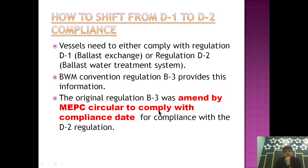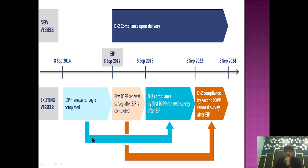As you can see from this chart, the Ballast Water Convention entered into force on 8th September 2017. All ships constructed after 8th September 2017 need to have a ballast water treatment system installed — that is, they need to have D2 compliance.